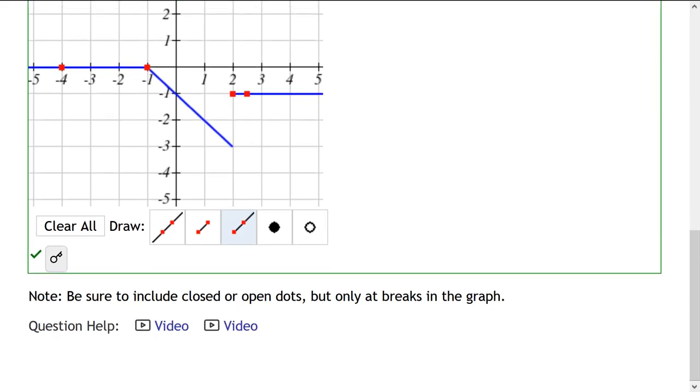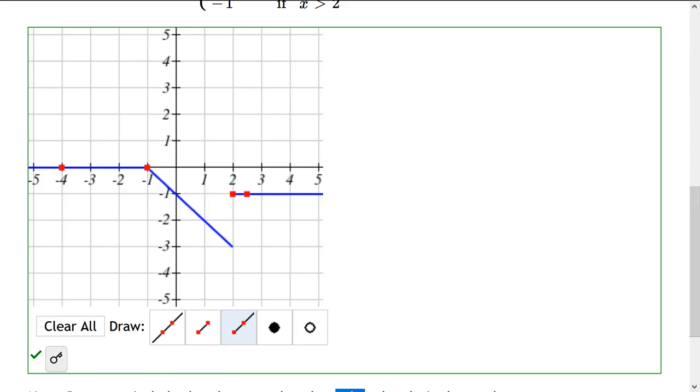Do not hit submit yet. There's one more important thing. Be sure to include closed or open dots, but only at the breaks in the graph. So there are two different pieces meeting right here. However, they line up perfectly, so these instructions do not say that we need to put any circles or dots here. We do have to put circles and dots here. So we need to figure out which one we should use. A dot means that point's on the graph. A circle means that point is not on the graph.